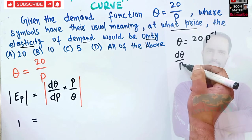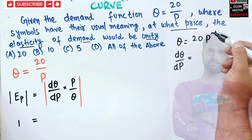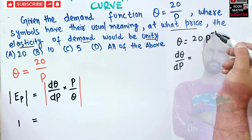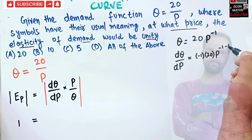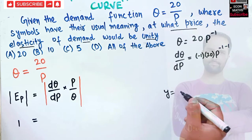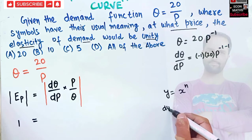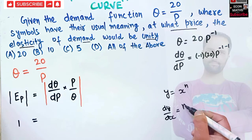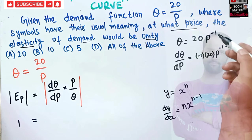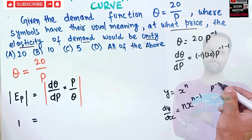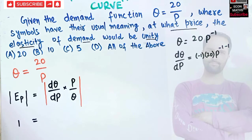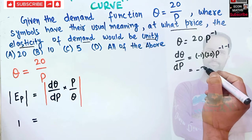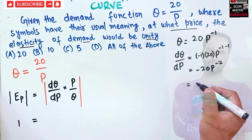Taking the derivative dQ upon dP means differentiating this function with respect to P. By the power function rule, the exponent becomes the coefficient. Recall that if y equals x to the power n, then dy upon dx equals n times x to the power n minus one. Applying this, the minus one exponent becomes the coefficient, giving us dQ upon dP equals minus 20 times P to the power minus two.